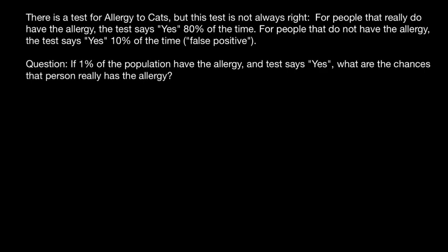Here's the problem. There is a test for allergy to cats, but this test is not always right. For people that really do have the allergy, the test says yes in 80% of the cases. For people that do not have the allergy, the test says yes 10% of the time — false positive. If 1% of the population have the allergy and the test says yes, what are the chances that the person really has the allergy?